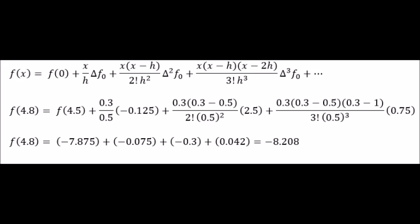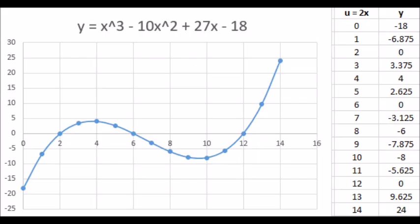H is the spacing between x values. In this case, it equals 0.5. Our interpolative value equals negative 8.208. Let's look at the same question in a slightly different way. It can be a useful thing to make the spacing h equal to 1. That is what I've done here.